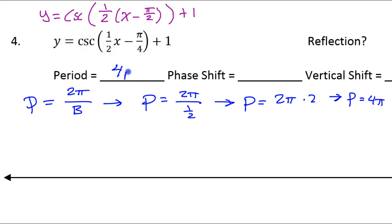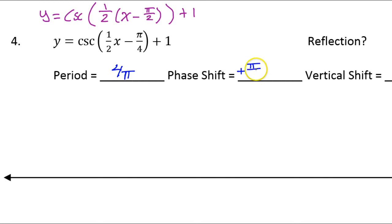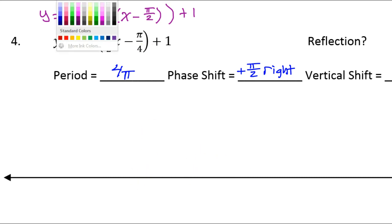Everyone should have that the period is 4 pi. Now the phase shift is right here, but we do the opposite sign. This negative pi over 2 means the phase shift is positive pi over 2 to the right. That's really important because I always start at the phase shift if there is one. Normally we start at 0, but not this time. We're going to start at pi over 2 because of that phase shift.